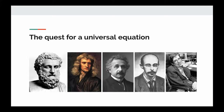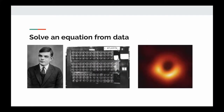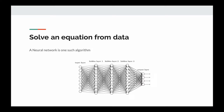We as humans have been in search of a universal equation that can define and explain how this universe works, and maybe we can use that equation to predict what's going to happen next. Even though we have not been able to achieve that yet, we've managed to approximate the underlying equation — at least in some cases. A neural network is one such algorithm; with it we can approximate these underlying functions in some real-world problems.